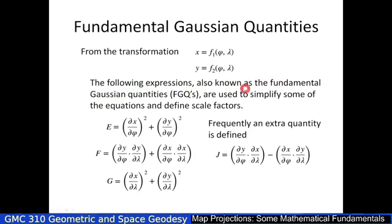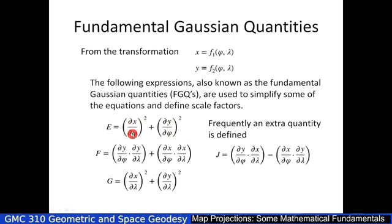The following expressions are calculated and we call them Fundamental Gaussian Quantities, or FGQs. They are used to simplify some of the equations — it's quite a long derivation, which you can find in the Map Projections 1 notes. The fundamental quantities are E, F, G, and J, each with derivatives as functions. Once you've differentiated the generating equations of a projection, you can calculate E, F, and G with respect to Phi and Lambda.